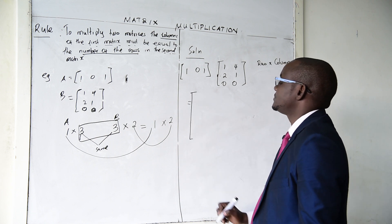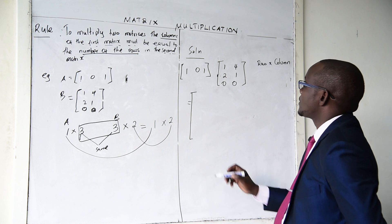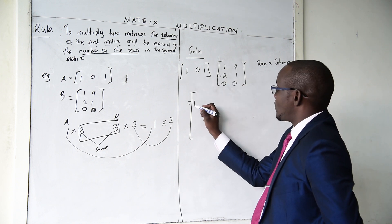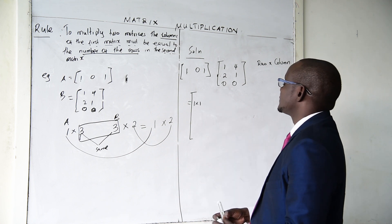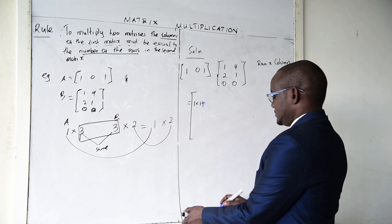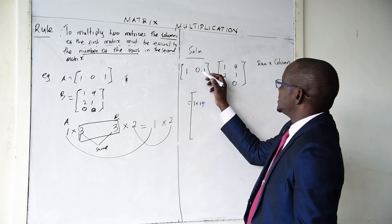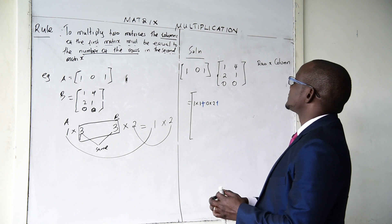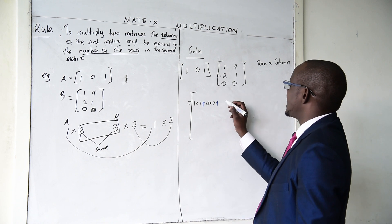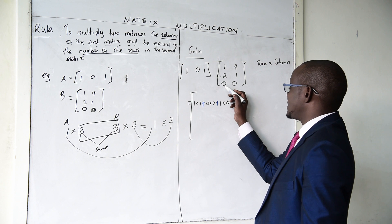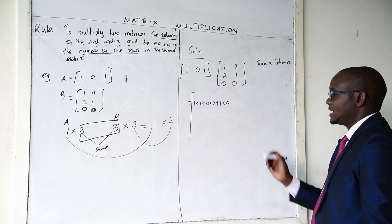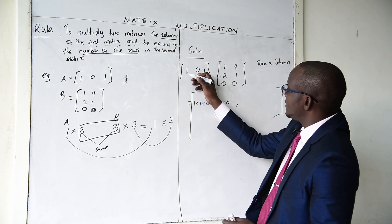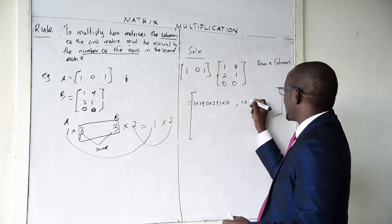For the first element: 1 multiplied by 1, plus 0 multiplied by 2, plus 1 multiplied by 0. That gives us 1 + 0 + 0 = 1.